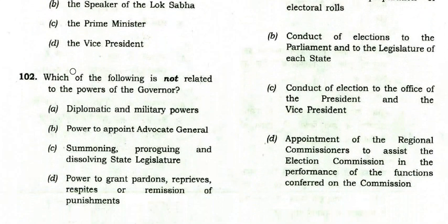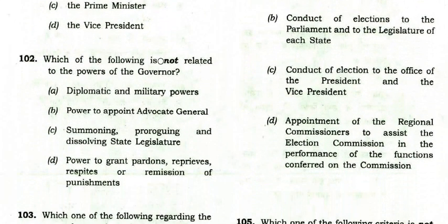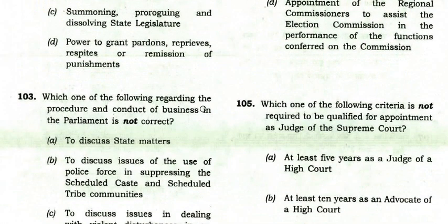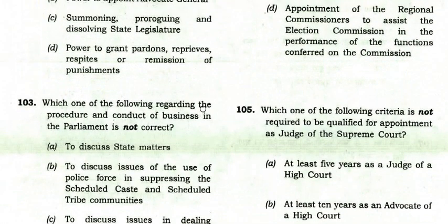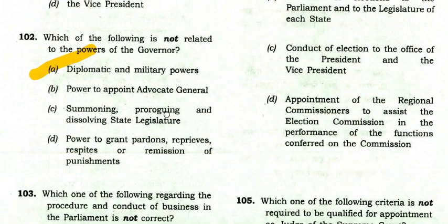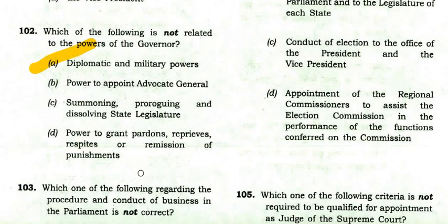Which of the following is not related to the powers and functions of the Governor? The answer is diplomatic and military powers. The Governor does have the power to appoint the Advocate General, summon and dissolve the state legislature, and grant pardons and remission of punishments.